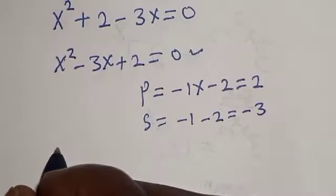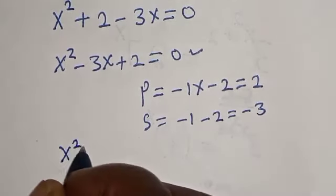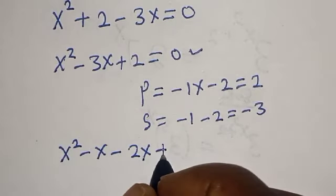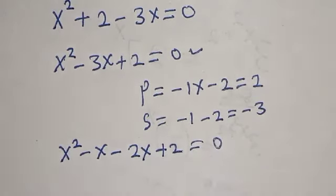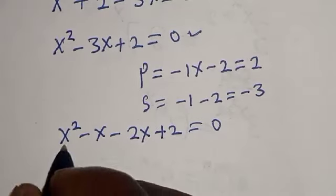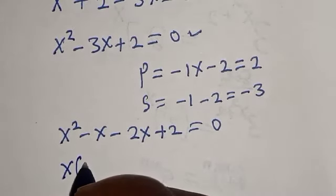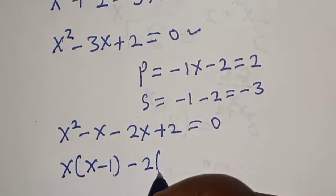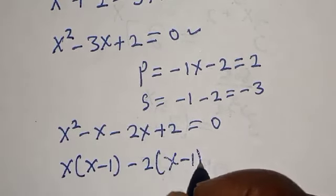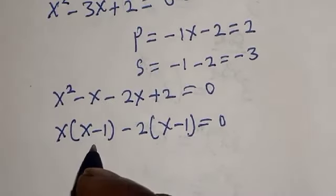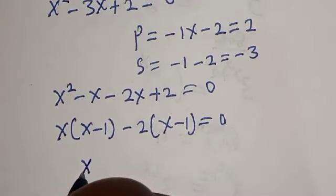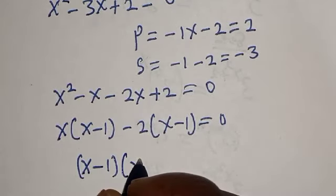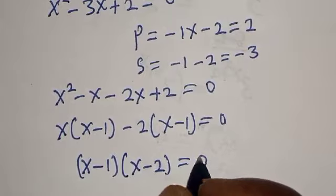Let's substitute: s squared minus s minus 2s plus 2 is equal to 0. Bringing out common factors: s bracket s minus 1, minus 2 bracket s minus 1, is equal to 0. Then s minus 1 is common, giving us s minus 1 multiplied by s minus 2 is equal to 0.